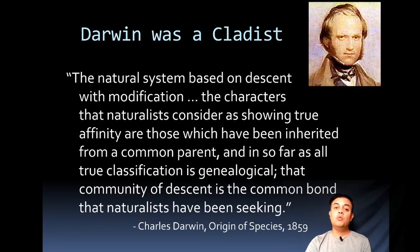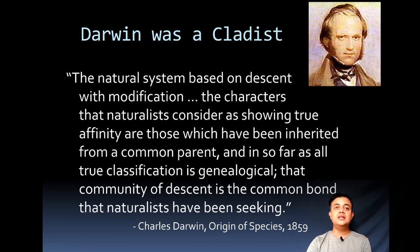Darwin was a cladist and a founding figure of cladistics. From the Origin of Species, published in 1859, he stated: 'The natural system is based on descent with modification. The characters that naturalists consider as showing true affinity are those inherited from a common parent, and in so far as all true classification is genealogical, the community of descent is the common bond that naturalists have been seeking.' Cladistics is natural classification, while phenetics is artificial — that is a major difference.